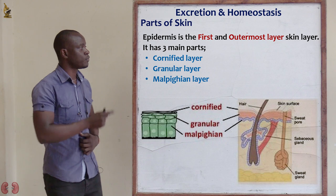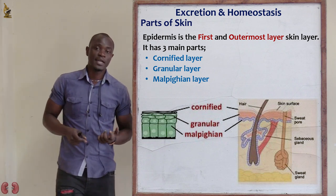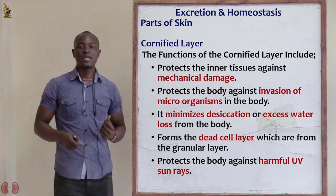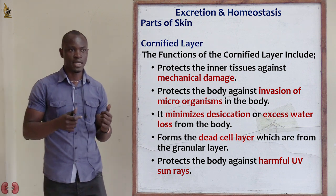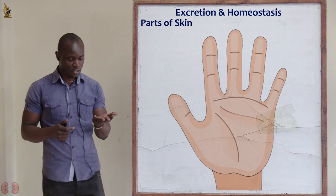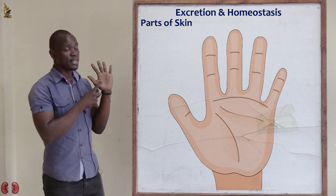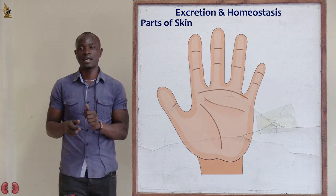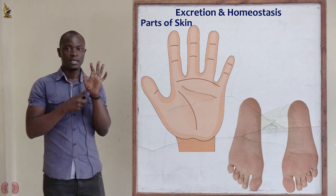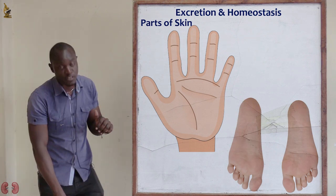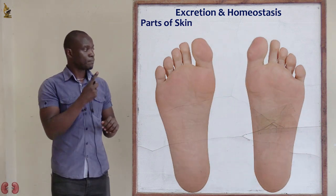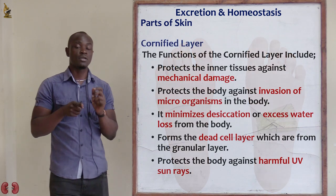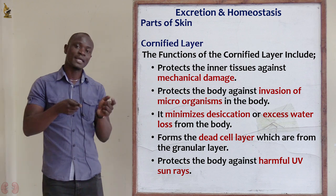The first layer is the cornified layer of the skin. The cornified layer is mainly thick in places where there is much friction — for example, the palms of the hand, where there is much friction due to gripping all the time. So the cornified layer is very thick there. Also the soles of the feet — the cornified layer is very thick in areas of much friction.